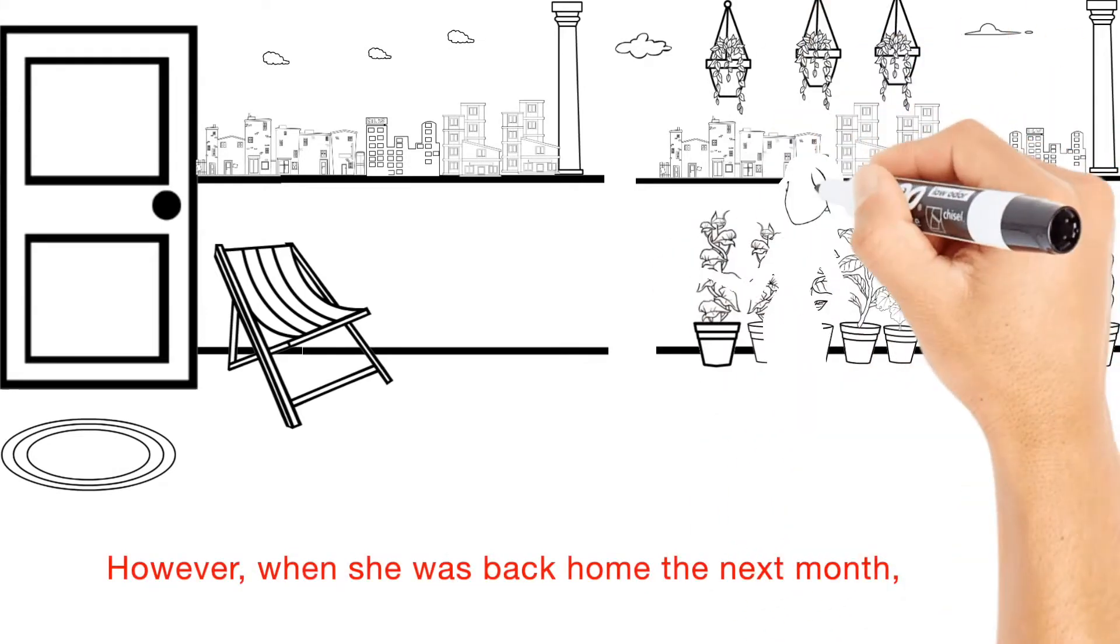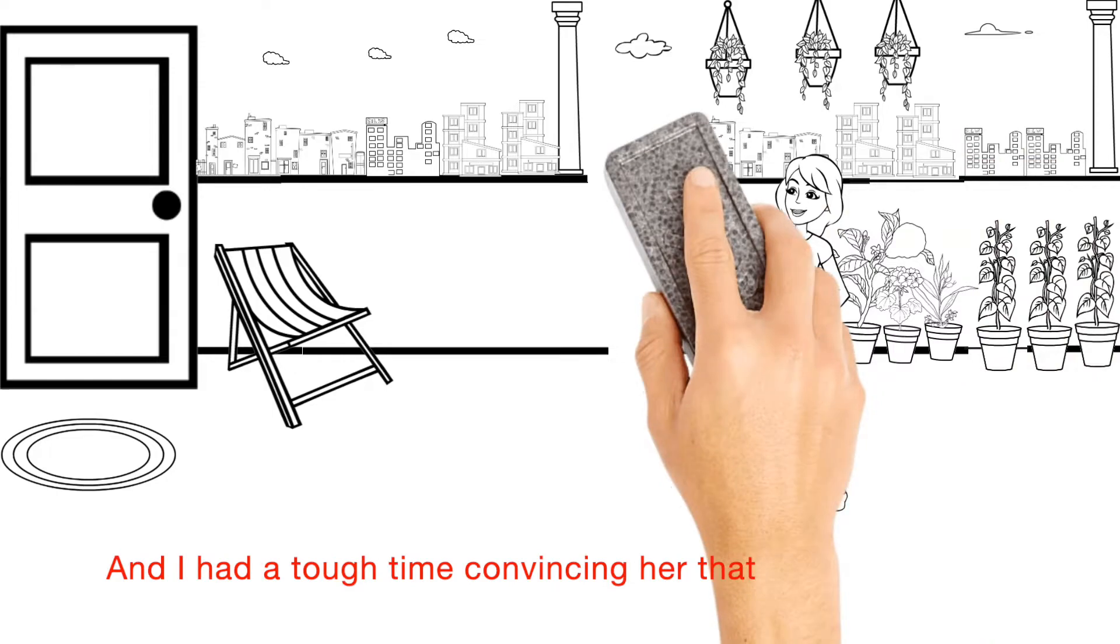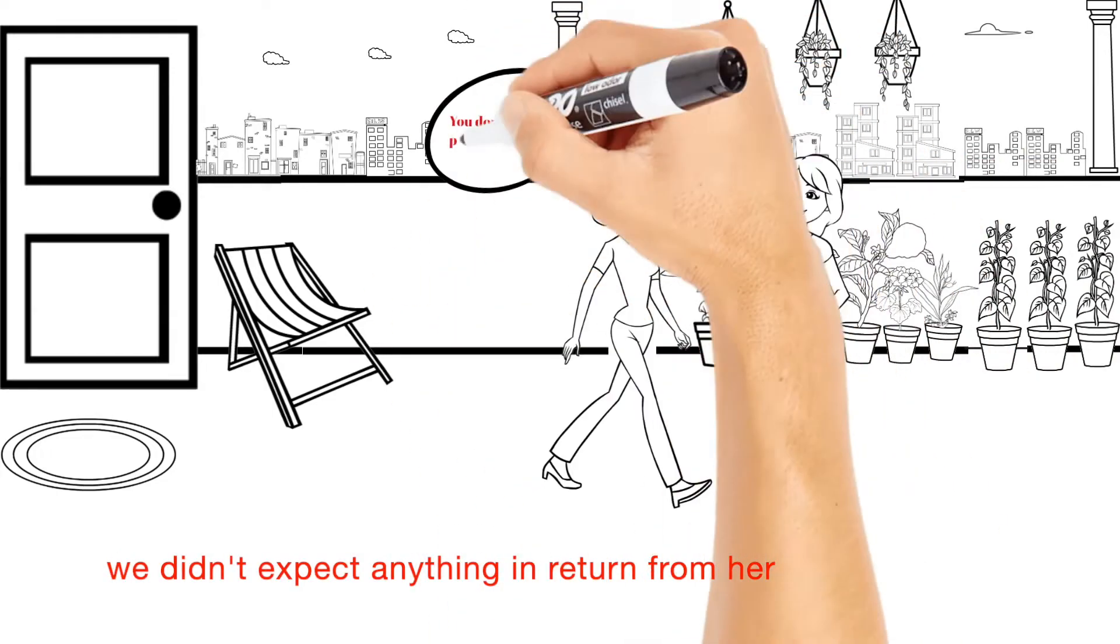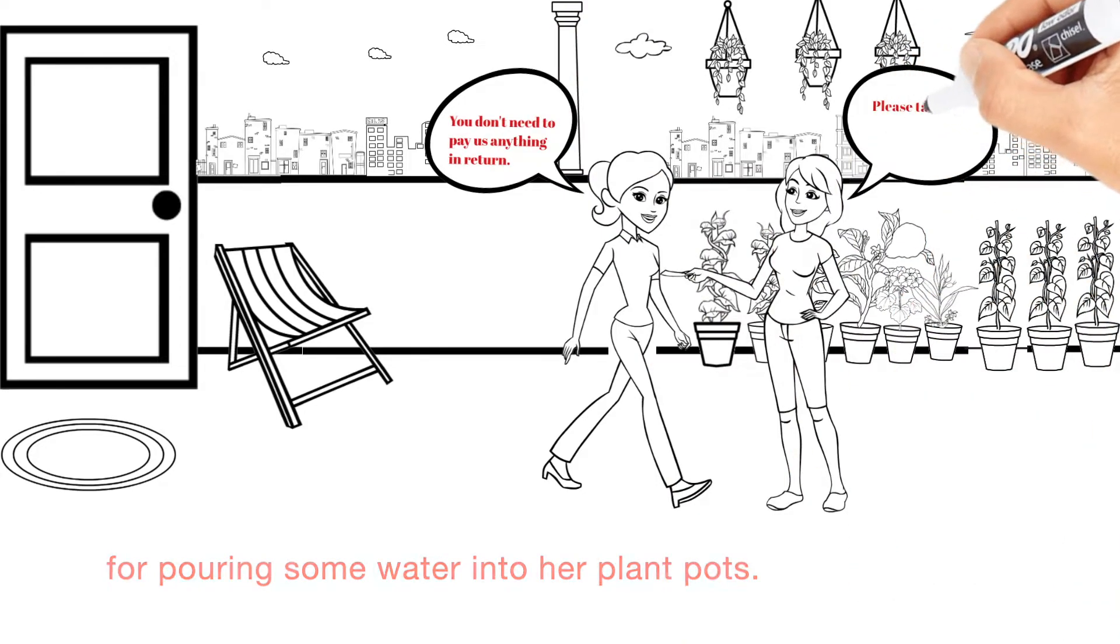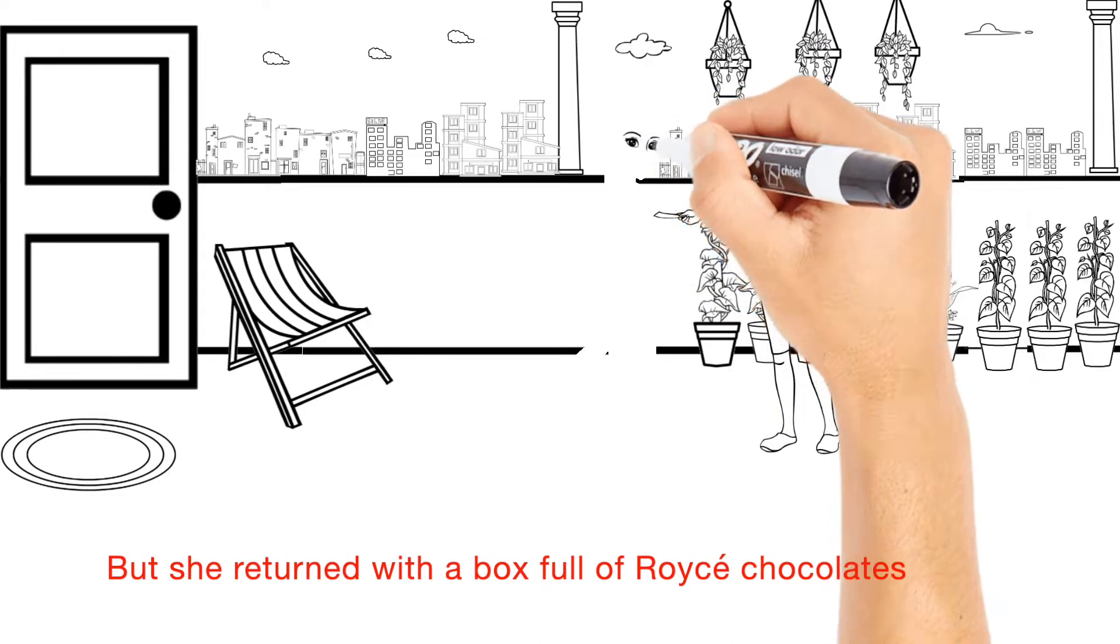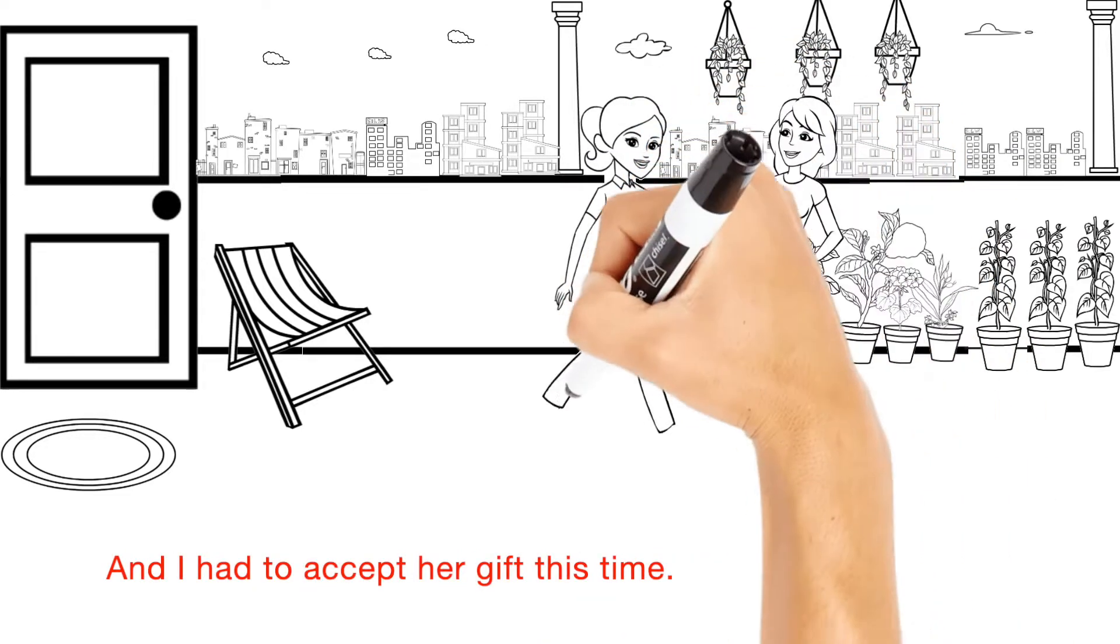However, when she was back home the next month, I refused to take any money from her. And I had a tough time convincing her that we didn't expect anything in return for watering some water into her plant pots. But she returned with a box full of Royce chocolates the following evening. And I had to accept her gift this time.